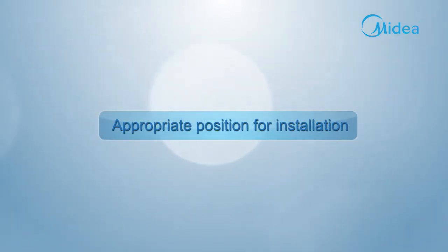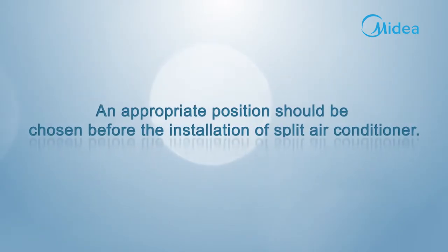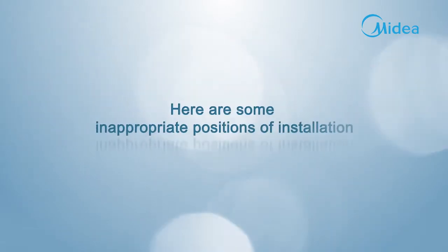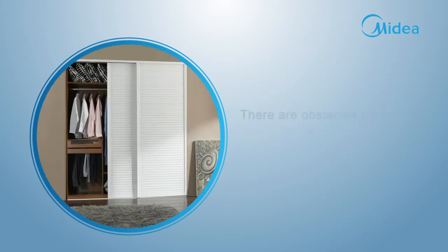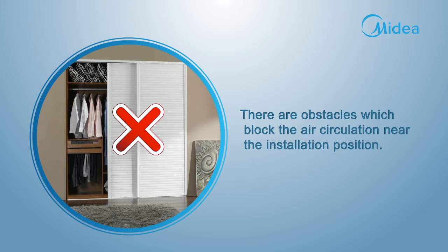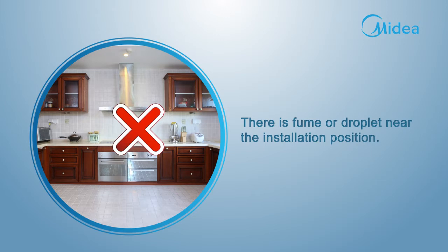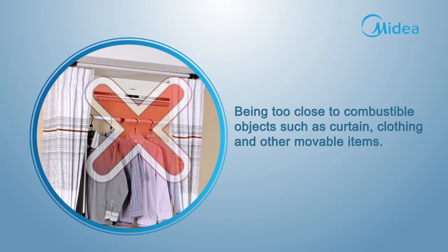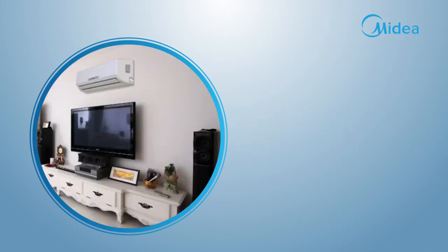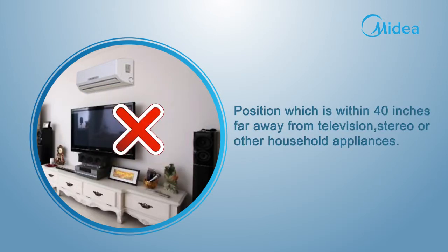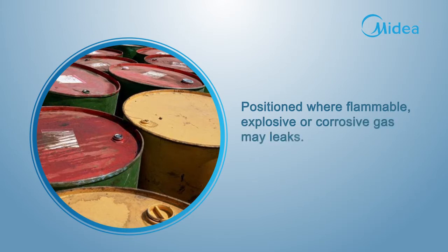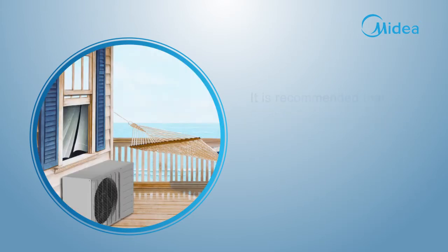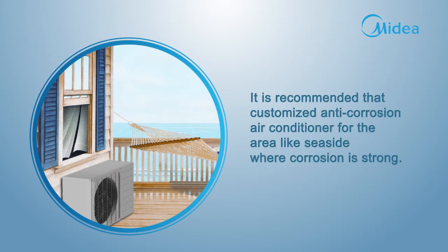Appropriate position for installation. An appropriate position should be chosen before the installation of a split air conditioner. Here are some inappropriate positions: where there is a heat source or steam source nearby; where obstacles block air circulation; where there is fume or droplet nearby; being too close to combustible objects such as curtain, clothing, and other movable items; within 40 inches of a television, stereo, or other household appliances; where ventilation is poor; or where flammable, explosive, or corrosive gas may leak.